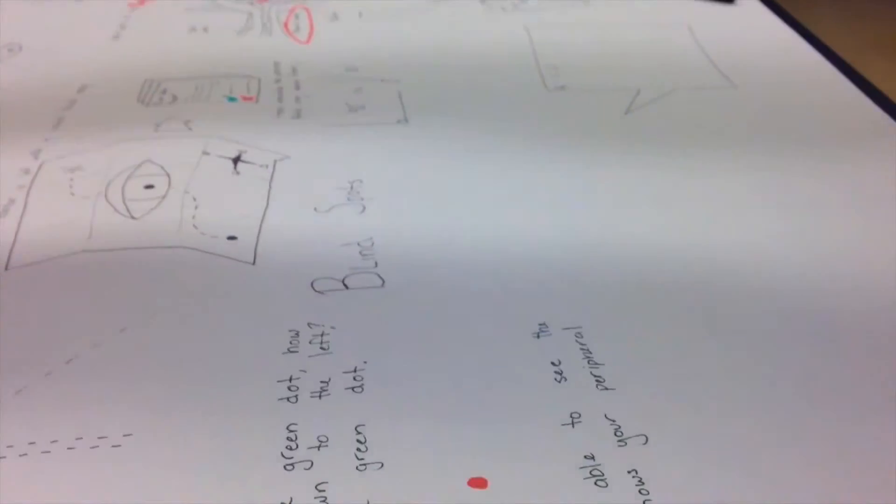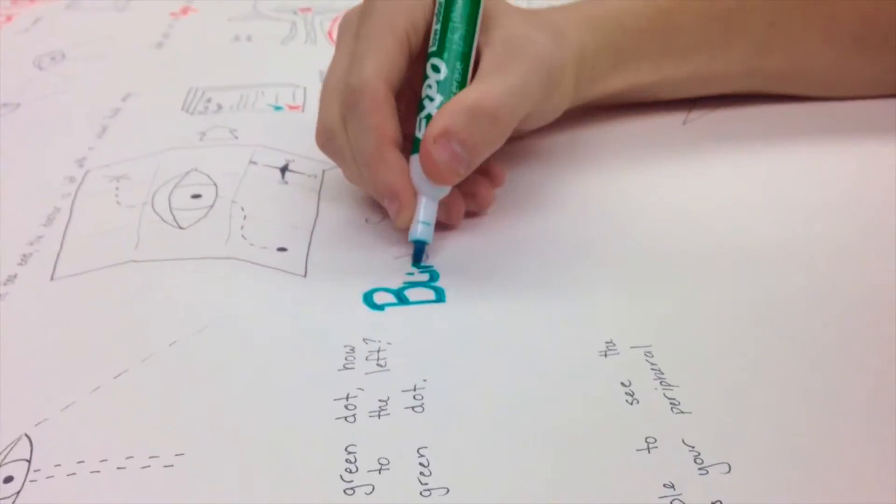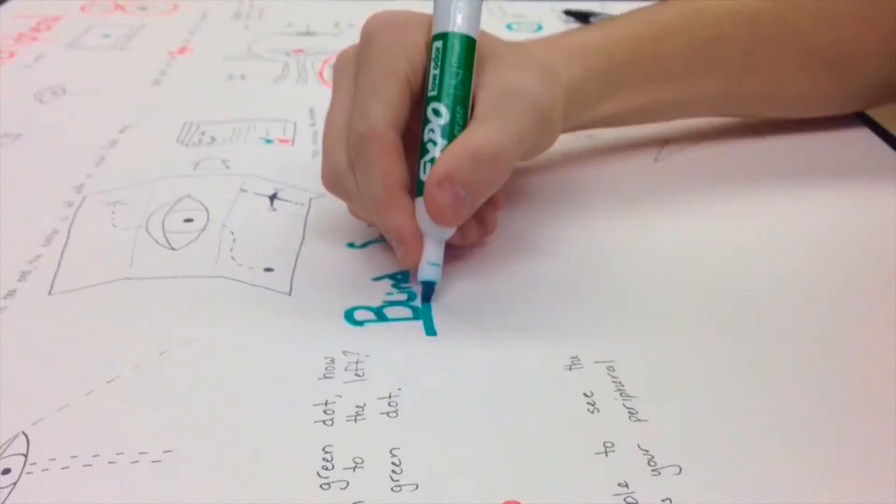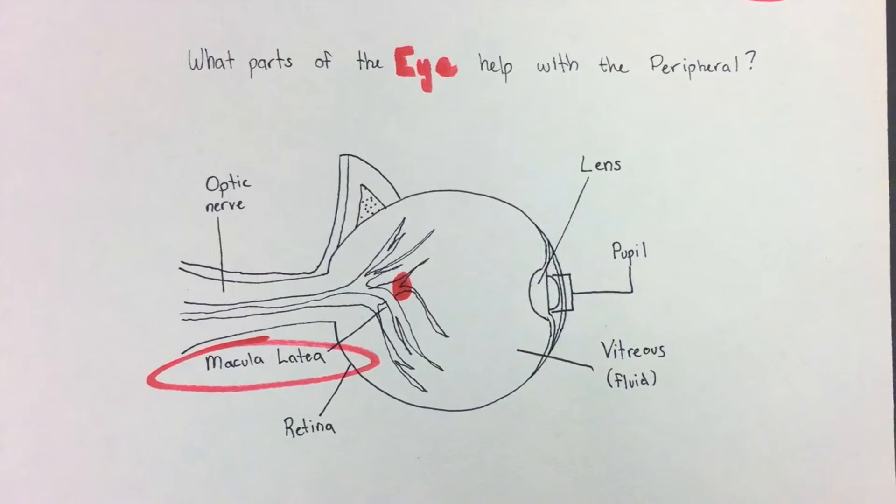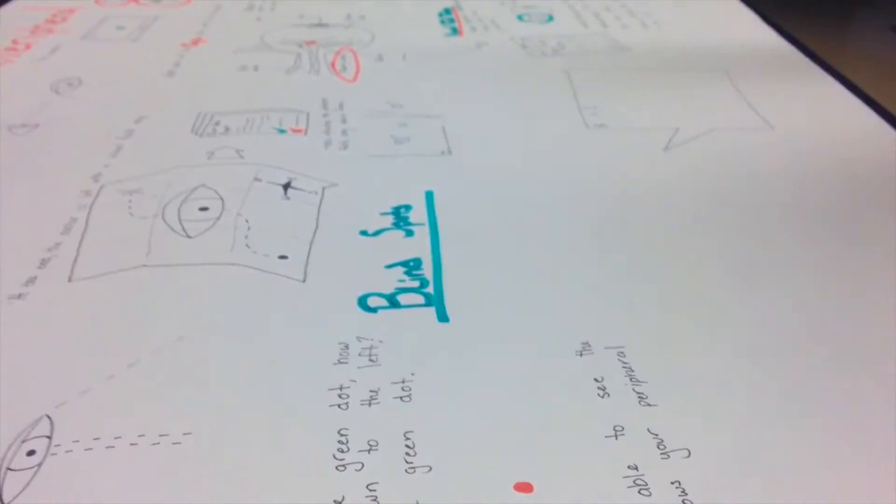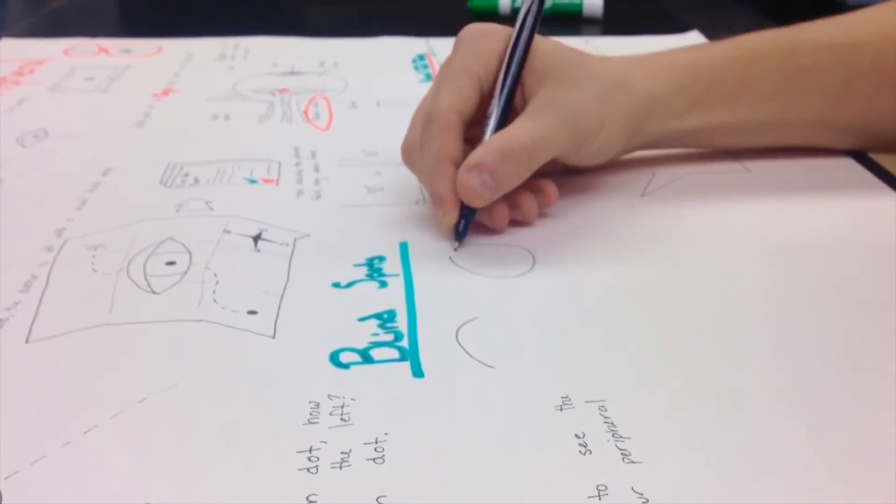Blind spots are small portions of the visual field of the eye that correspond to the position of the optic disc, which is the optic nerve head within the retina. There are no photoreceptors, rods, or cones in the optic disc and, therefore, there is no image detection in this area.